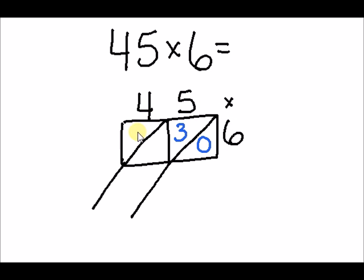4 times 6 is 24. And again, we write them on either side of the box. Now, we're ready to add.